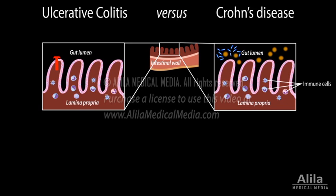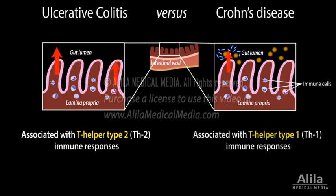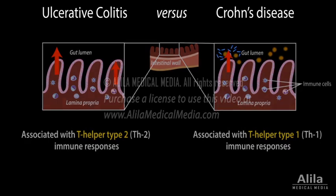Both conditions result from an inappropriate response of the immune system, but their mechanisms are likely different. Ulcerative colitis is associated with abnormally high levels of helper T cell type 2, while Crohn's disease has more type 1 activities.